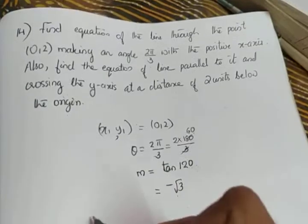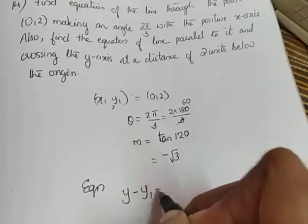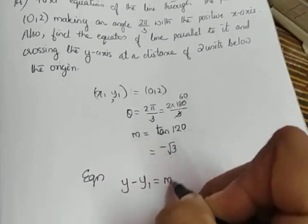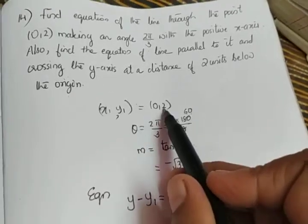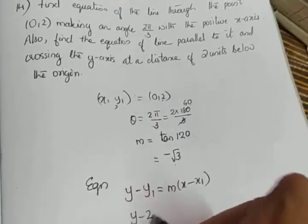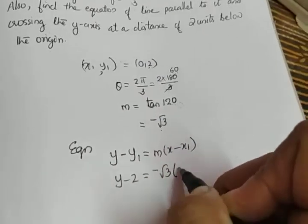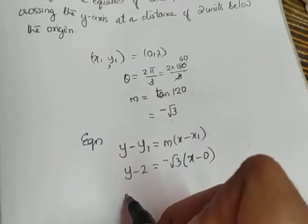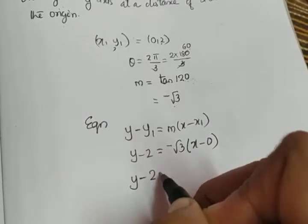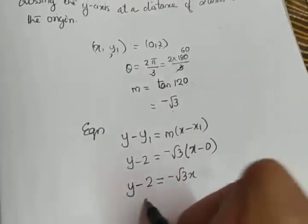Now we write the equation using the point-slope form: y − y₁ = m(x − x₁). With y₁ = 2 and m = −√3 and x₁ = 0, we get y − 2 = −√3·x. This is the equation of the first line.